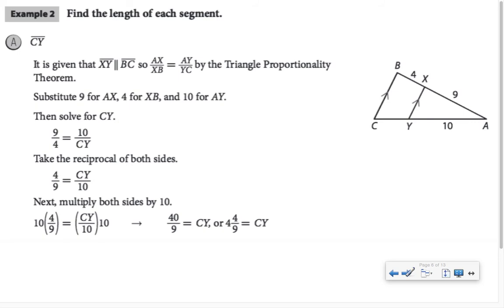Let's use the triangle proportionality theorem to find some segment lengths. In Example 2 Part A, we're finding the length of CY. Notice this proportion is true, and then they substitute values from the diagram. They're taking the reciprocal of both sides and then multiplying by 10. That's one way to do it, but a lot of you are very comfortable with cross-multiplying. You can totally do that. However, I would urge you to use this answer, 40 over 9. Don't rewrite it as 4 and 4 ninths. Mixed fractions are so junior high.